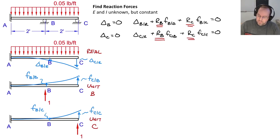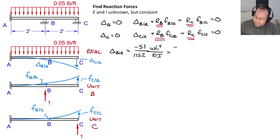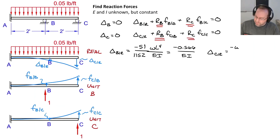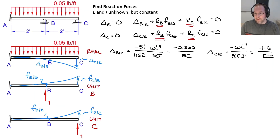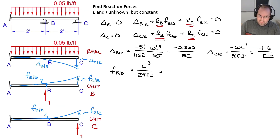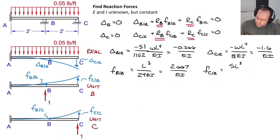The displacement at B due to applied loads is negative 51/1152 times WL⁴/EI, which evaluates to negative 0.566/EI (in pound·feet³). The displacement at C due to applied loads is negative WL⁴/(8EI), equal to negative 1.6/EI. For the flexibilities: F_BB equals L³/(24EI), evaluating to 2.667/EI, and F_CB equals 5L³/(48EI), evaluating to 6.667/EI.